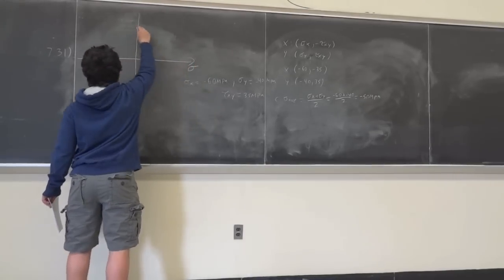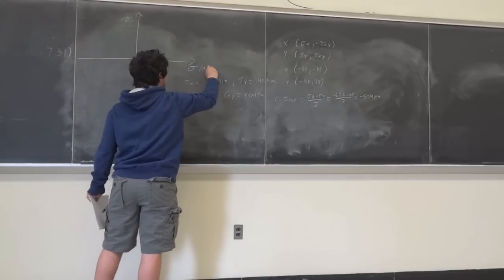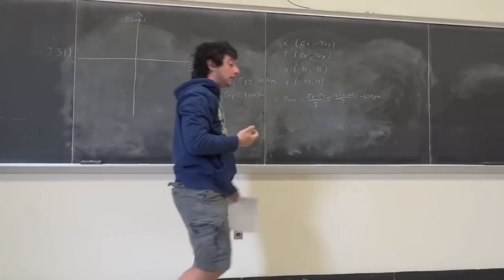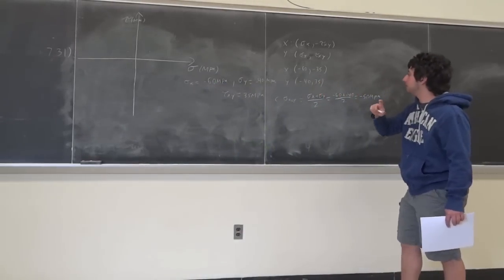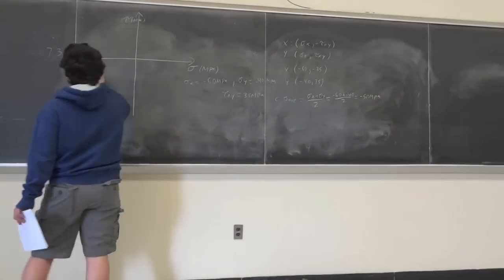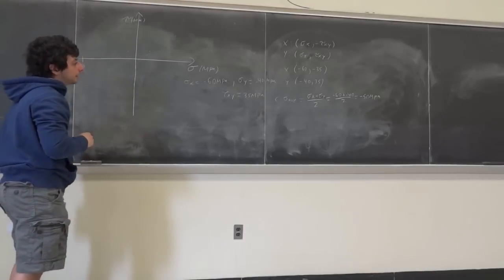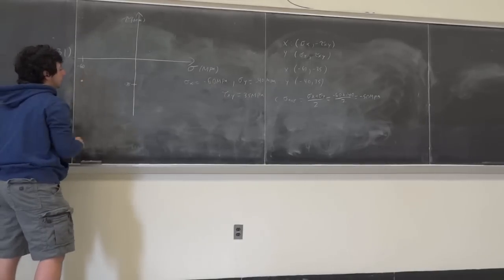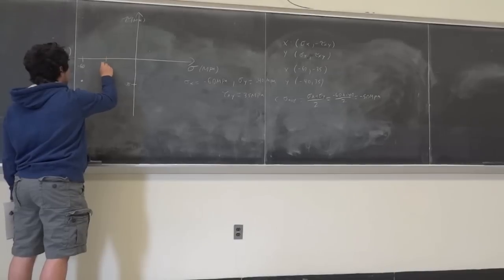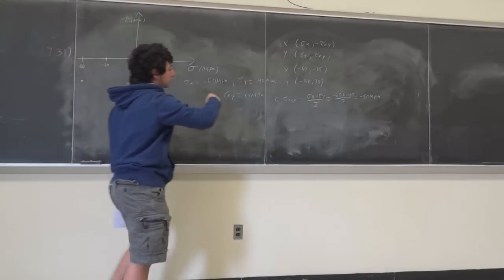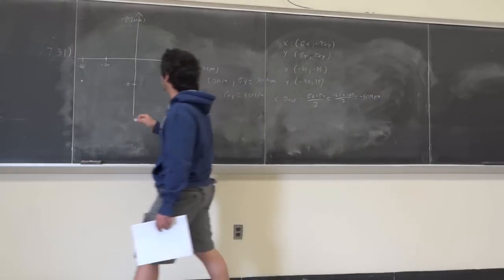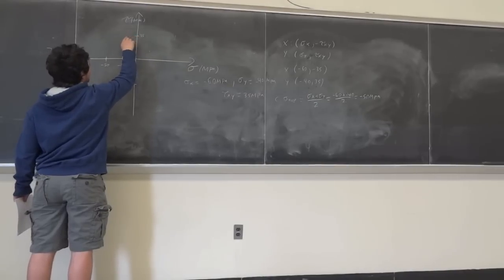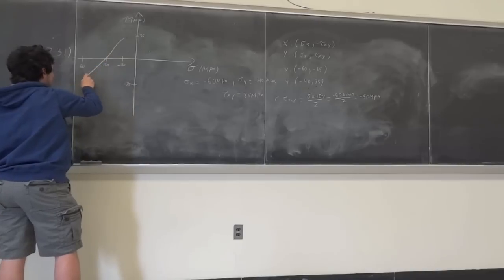This is your sigma axis, this is your tau axis, and they're both in MPa. We need to know where these points lie. For your X coordinate it's negative 60 comma negative 35 — so negative 60 is here and negative 35 is over here. The center of the circle is minus 50, and your other point Y is minus 40 comma 35. Then you draw a straight line between X and Y, and then you have a circle.